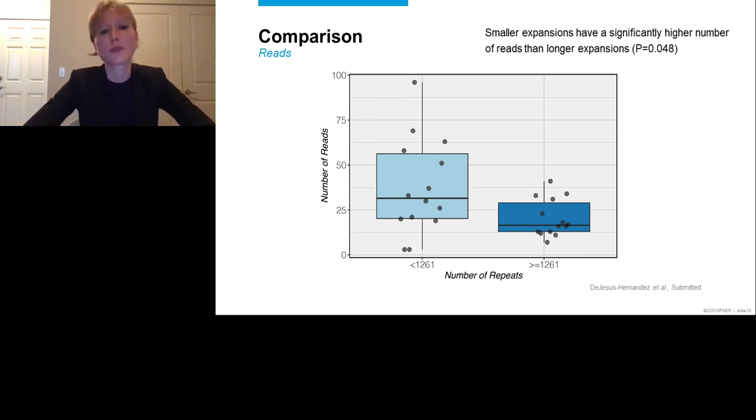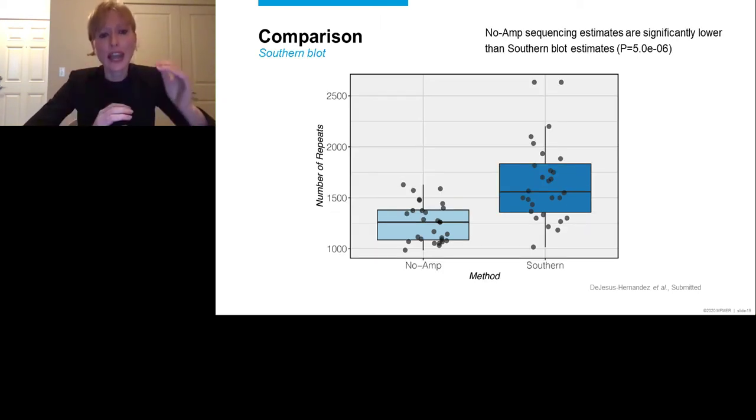We also noticed something else. When we compare the actual length between southern blotting and no-amp sequencing, there was a significant difference. And you can see on this slide that there was much more variability based on southern blotting than on no-amp sequencing. And the estimates also appear to be lower using no-amp sequencing. So, yes, there is a significant association between no-amp sequencing and southern blotting, but no-amp sequencing has a tendency to underestimate the size.